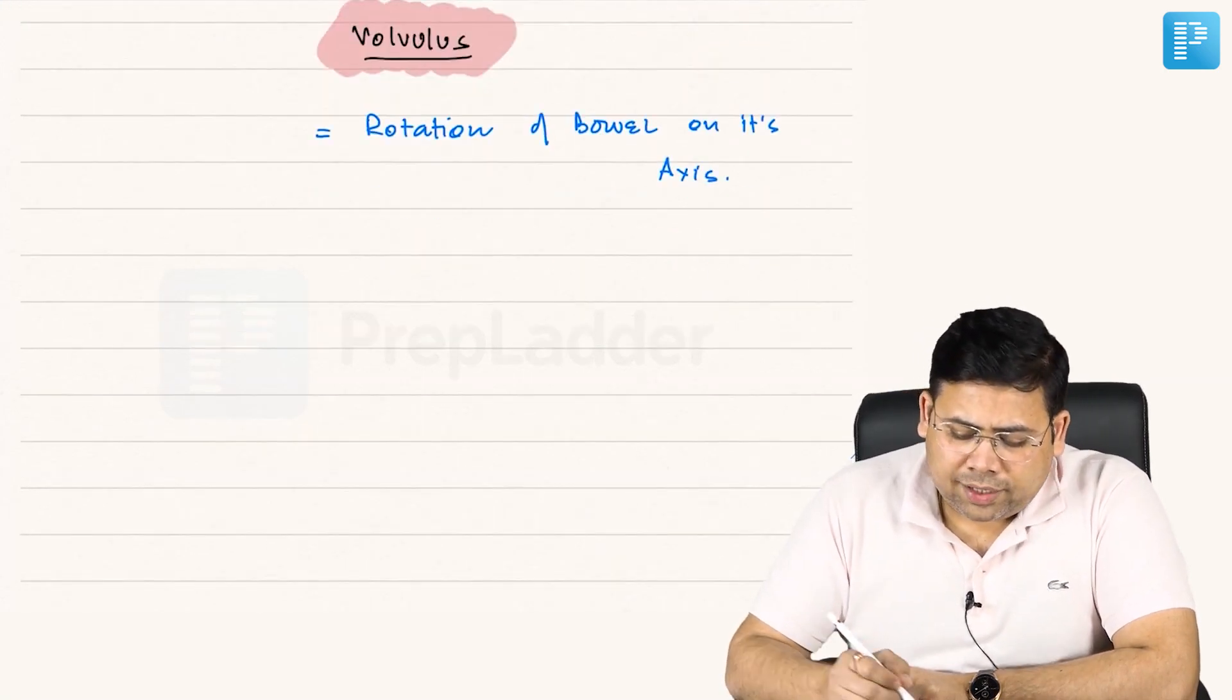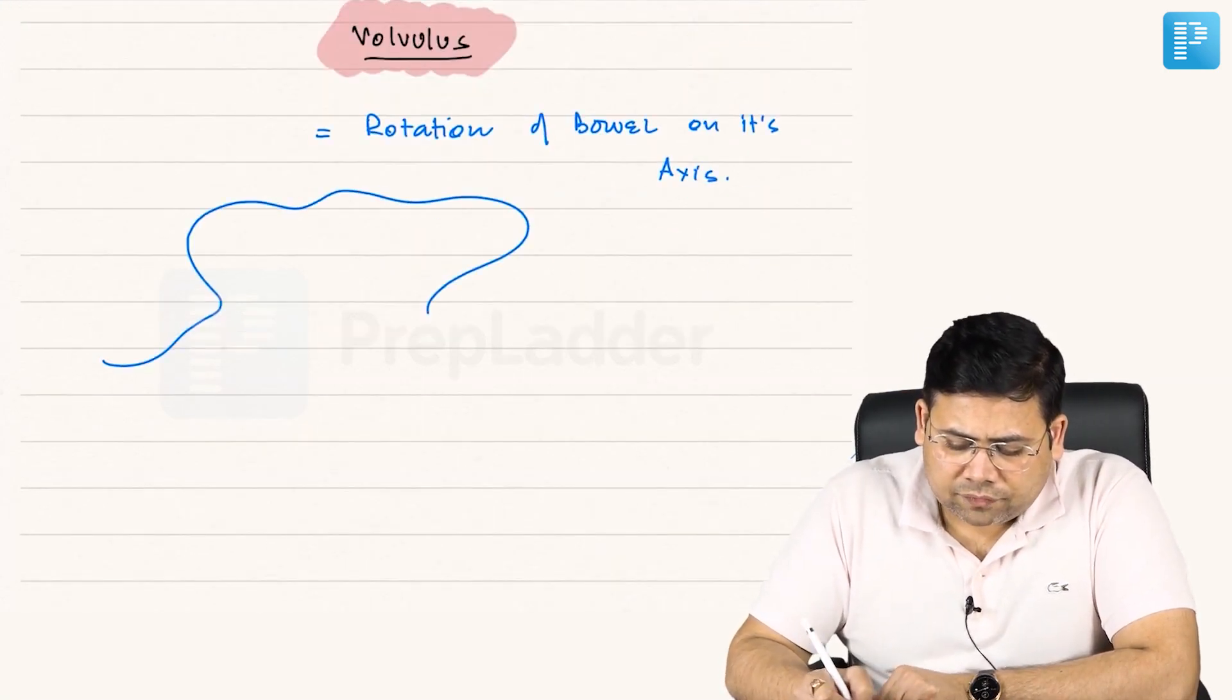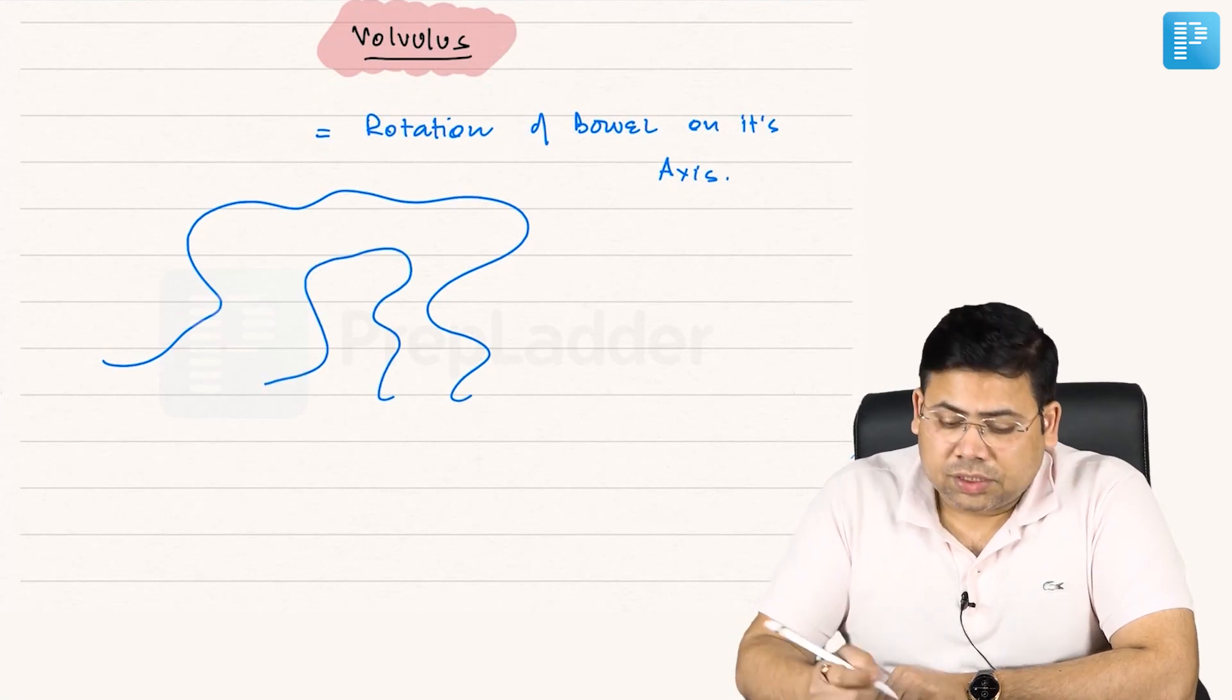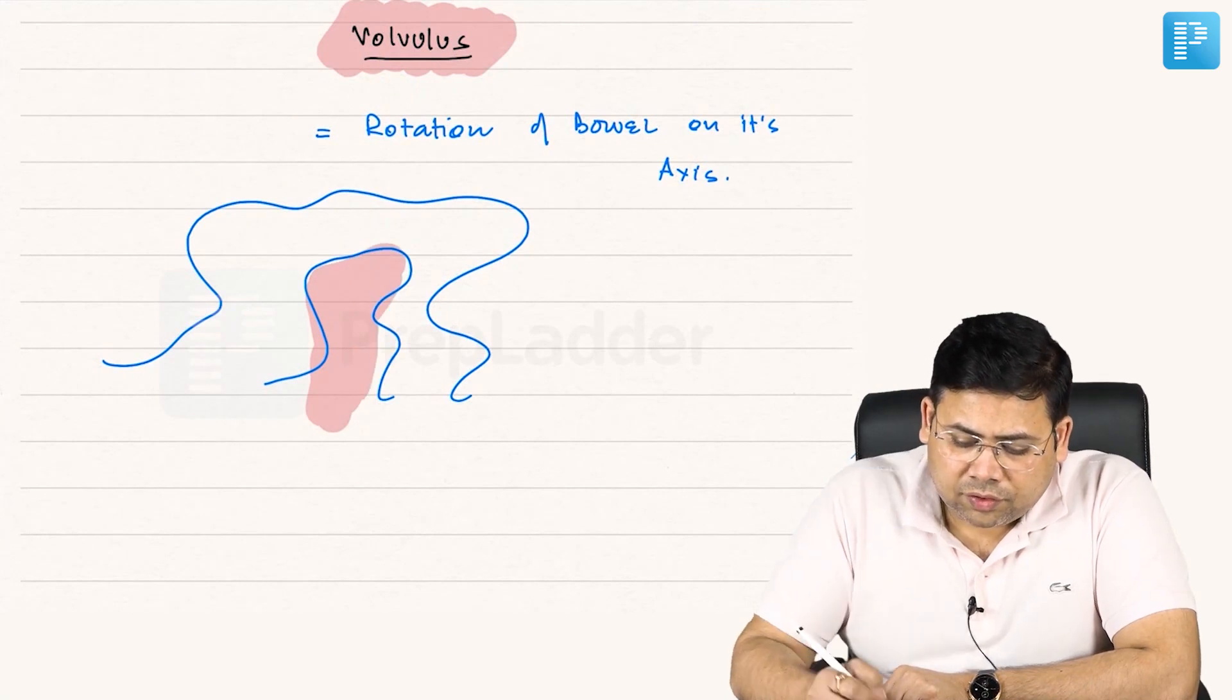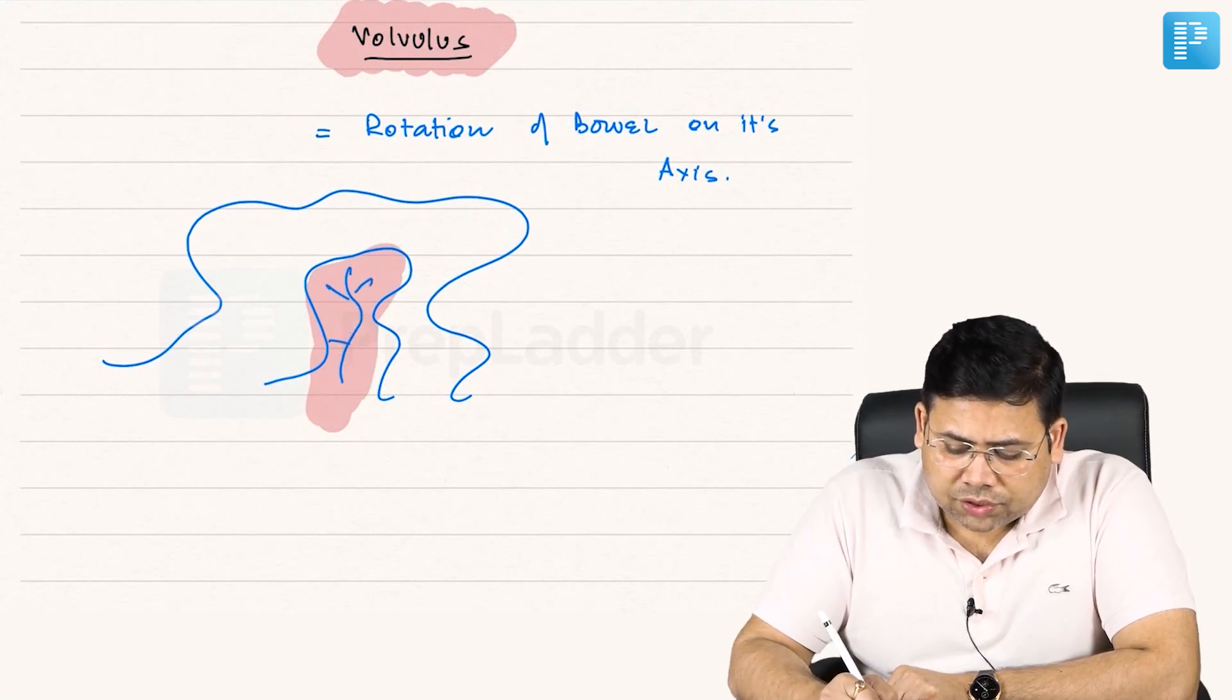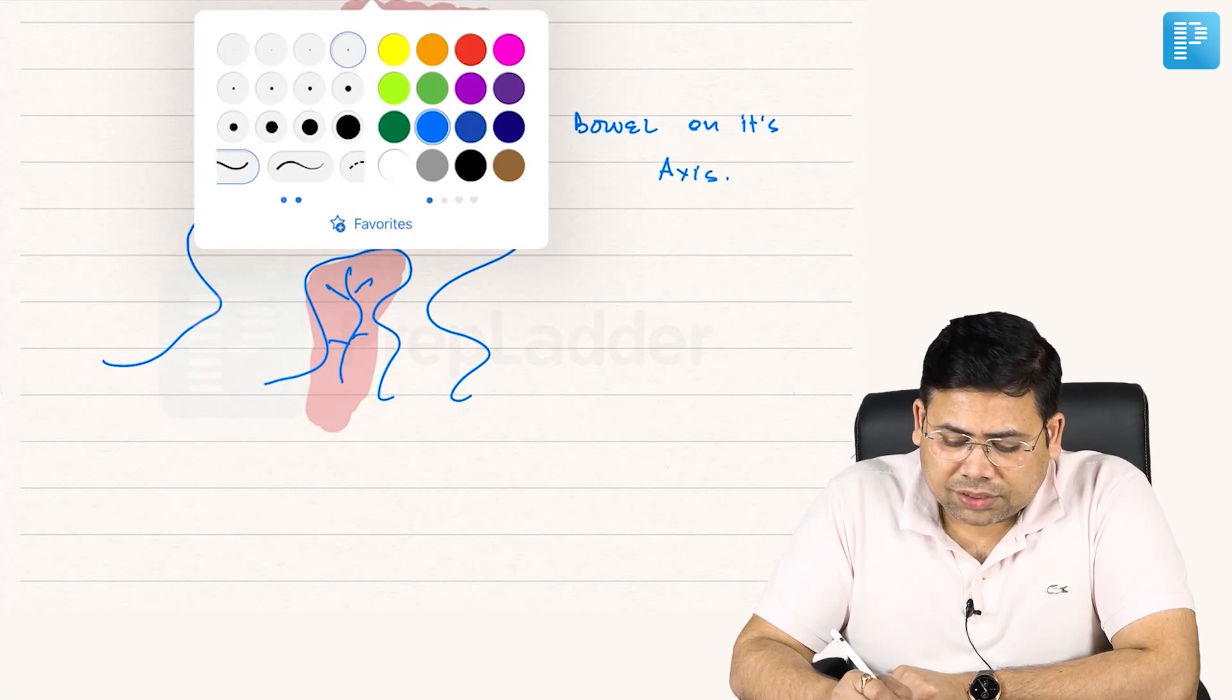Let us see if this is the bowel, how this volvulus occurs. This is the mesentery of this bowel. The rotation can happen along this axis.